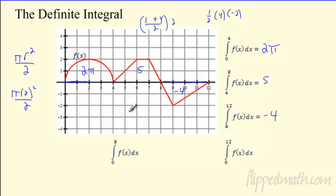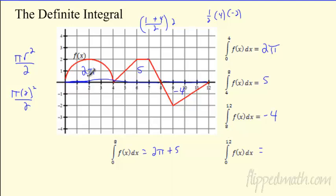So we can get negatives for our integrals. Now for some properties. What if I want to go from 0 to 8? That would be the area under the curve across both regions, so just add them together: 2π plus 5. And if I want to go all the way from 0 to 12, I take the positive parts — 2π plus 5 — and subtract the negative 4, giving 2π plus 1.